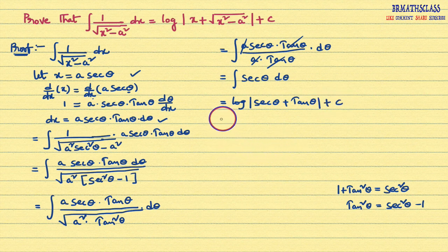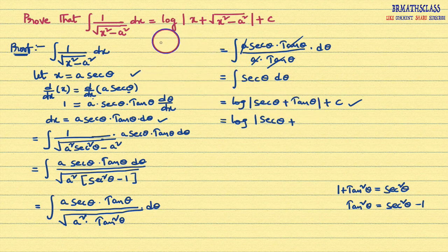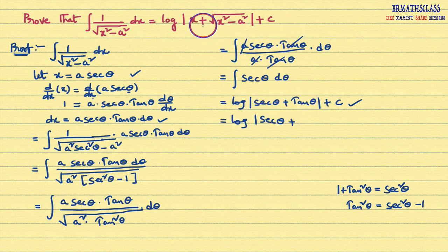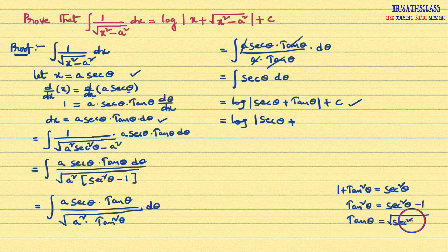So this equals log mod secant theta plus tan theta. Now, can we write tan theta in terms of secant theta? The integration is completed here, but we need to simplify to get the answer in terms of x. We know tan squared theta equals secant squared theta minus 1. Applying square root on both sides, tan theta equals root over secant squared theta minus 1.